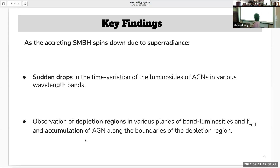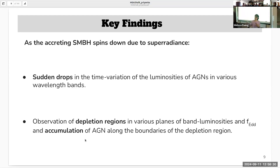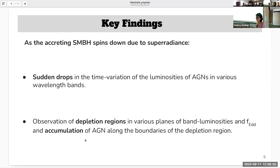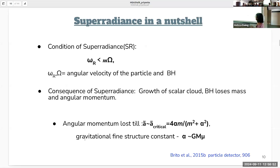Quickly summarizing the key findings: as accreting supermassive black holes spin down due to superradiance, we observe sudden drops in the time variation of different band luminosities. We also observe the formation of a depletion region and the accumulation of AGN along the boundaries of this region in various planes of band luminosities and the Eddington ratio. Before going into detail, let's quickly understand the condition under which superradiance occurs.